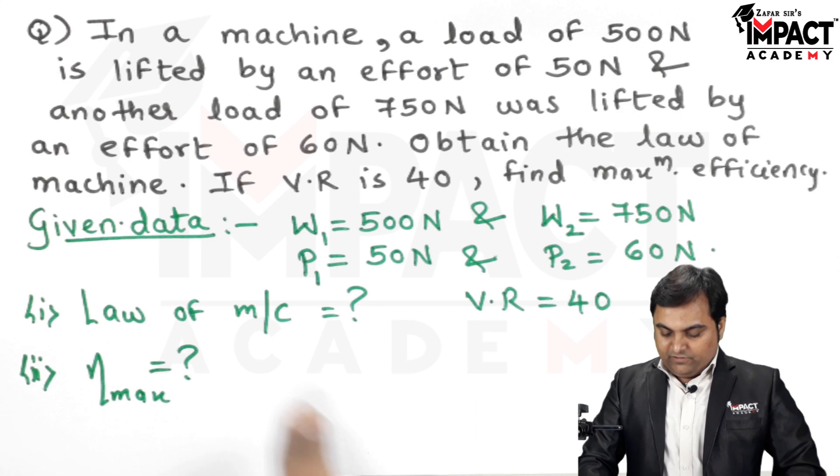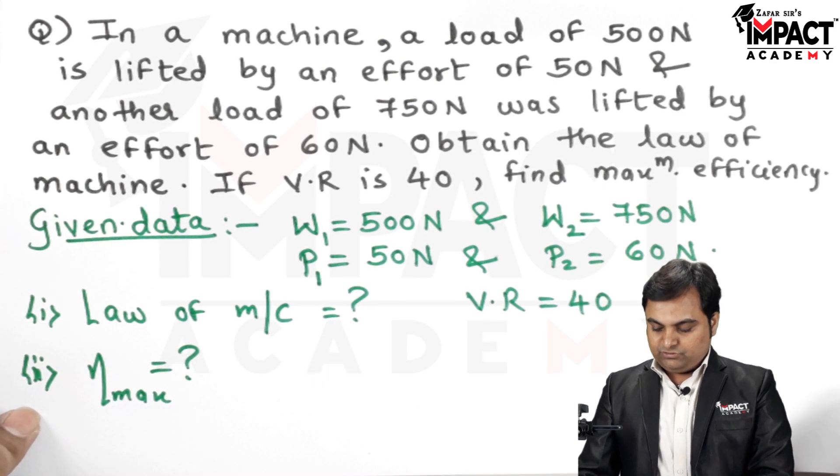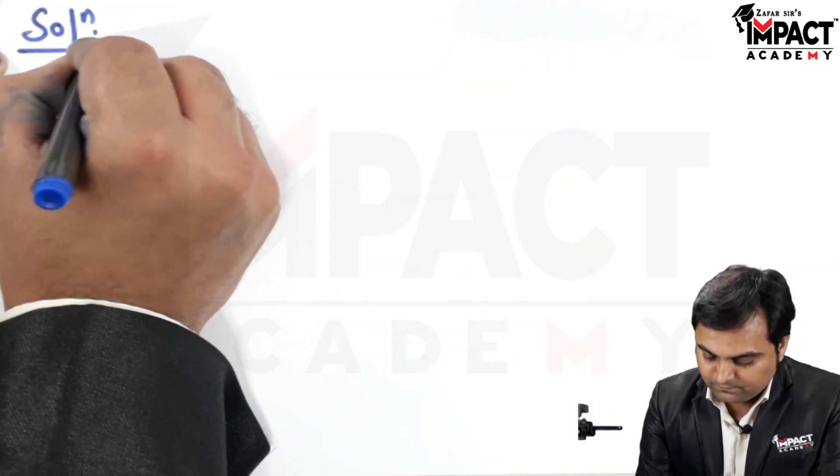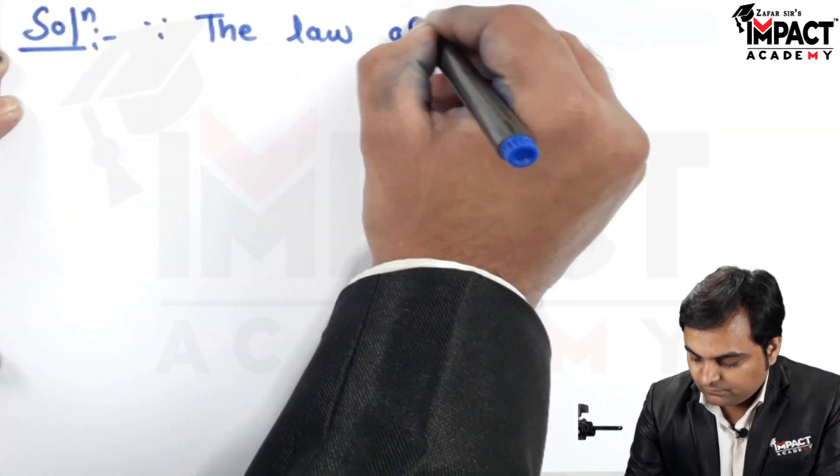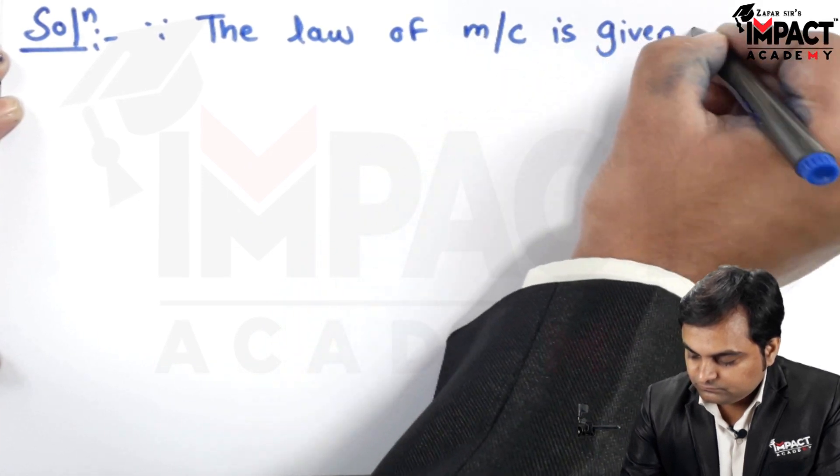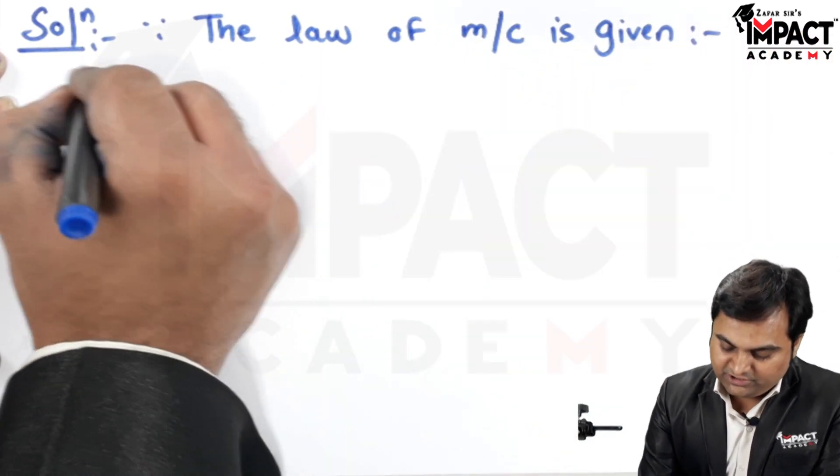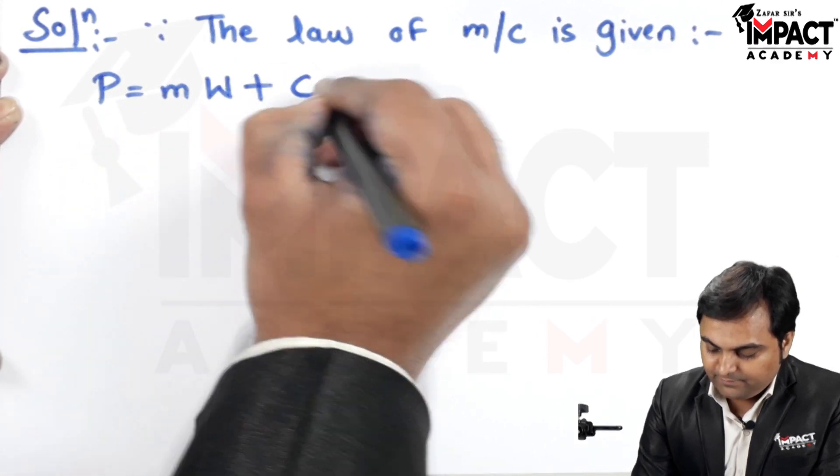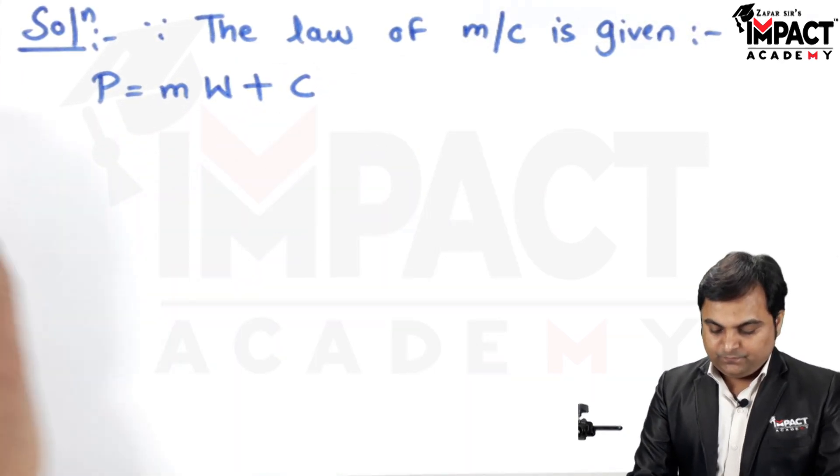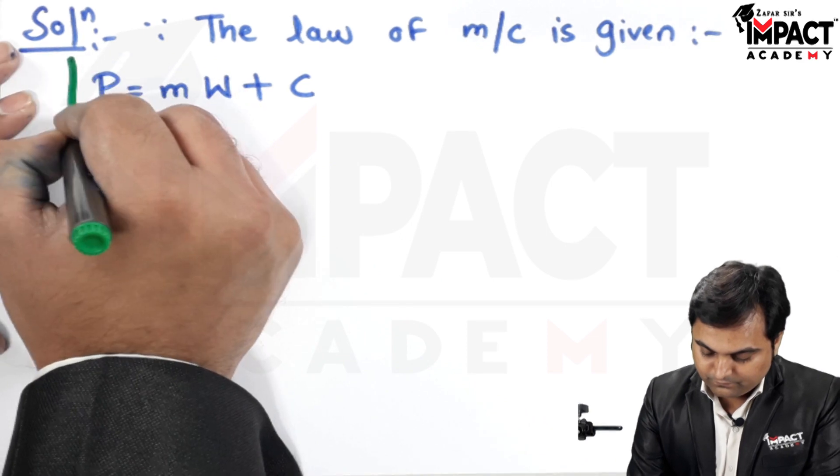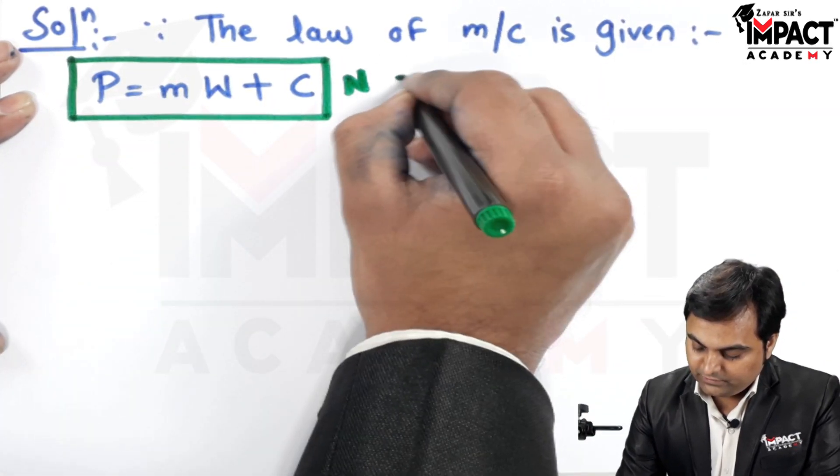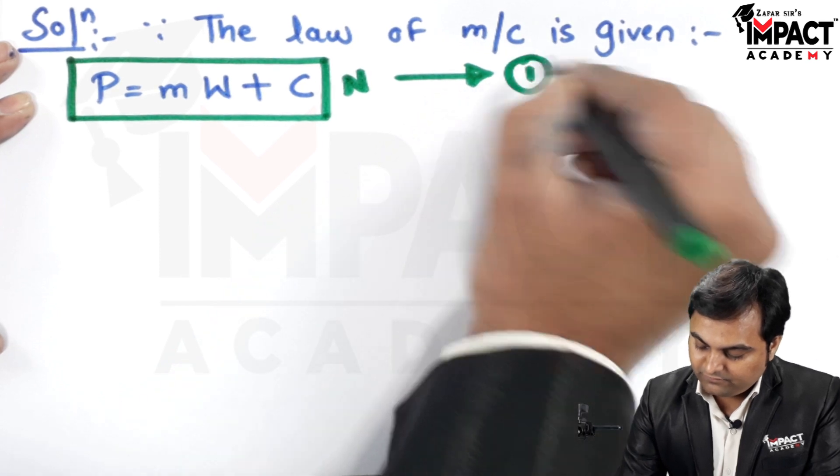Starting with the solution, the law of machine is given by P equals m times W plus C. Putting the values, P1 is 50 and W1 is 500.